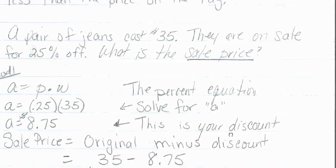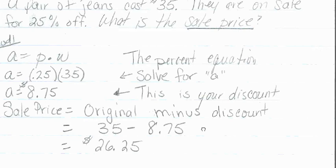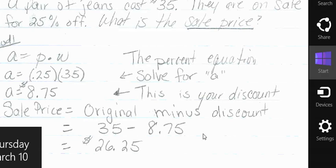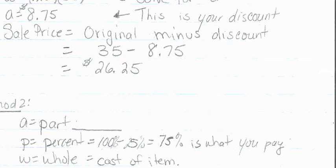So a second way to look at this is - we're looking for the part that we're going to save, p, which is our percent. If we are saving 25% from 100%, this could also mean that we pay 75% of the jeans.